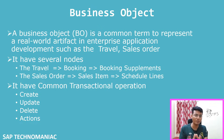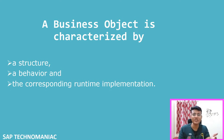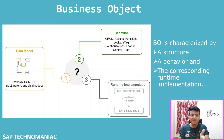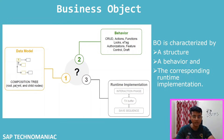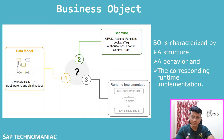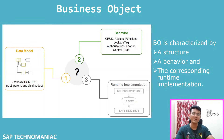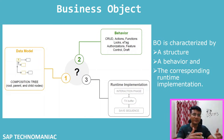A business object is characterized by three things: structure, behavior, and a corresponding runtime implementation. Structure means the data model in the form of a compositions tree, with root, parent, and child nodes. Behavior defines how it will behave - CRUD operations, actions, functions, locks, authorization, feature control, and draft. The runtime implementation involves the interaction phase, transactional buffer, and commit sequence - all of which we will discuss in upcoming videos.